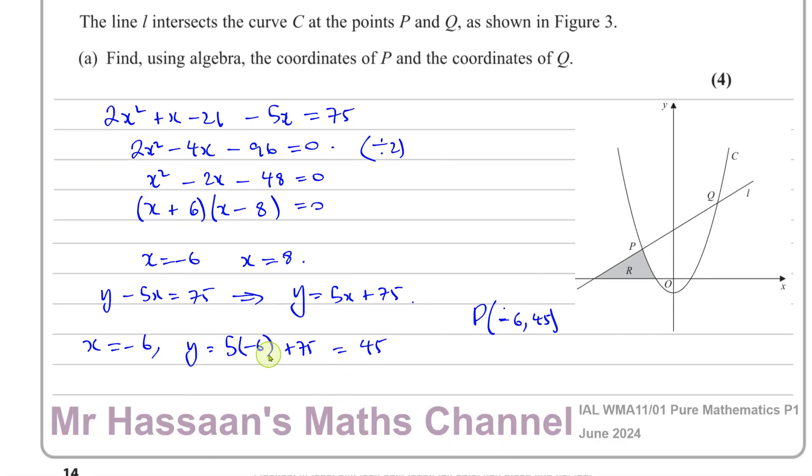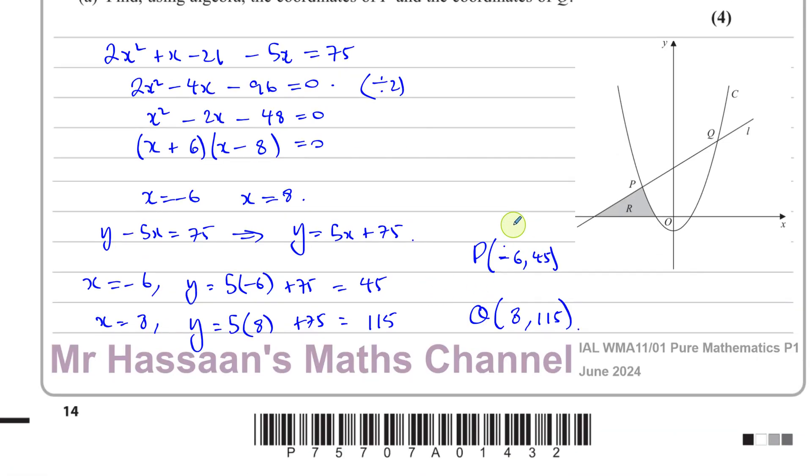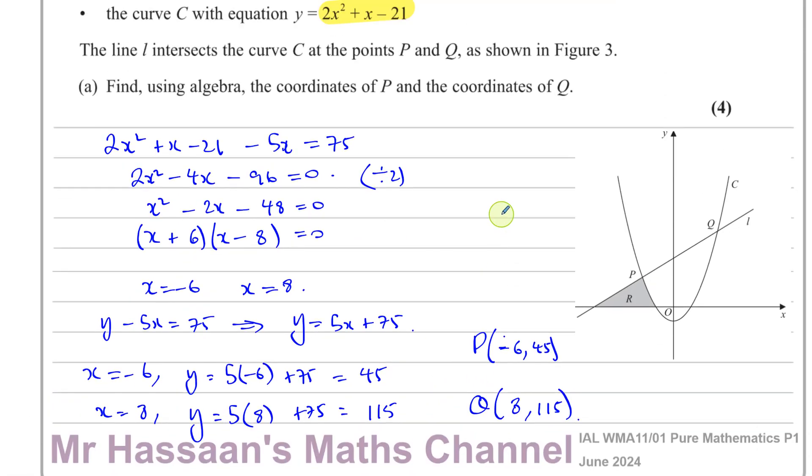And as for the coordinates of Q, when x equals 8, y equals 5 times 8 plus 75, that's 40 plus 75, which is 115. So the coordinates of Q are 8 and 115. So there's the answer to part A of this question. Now we're going to go on to part B.